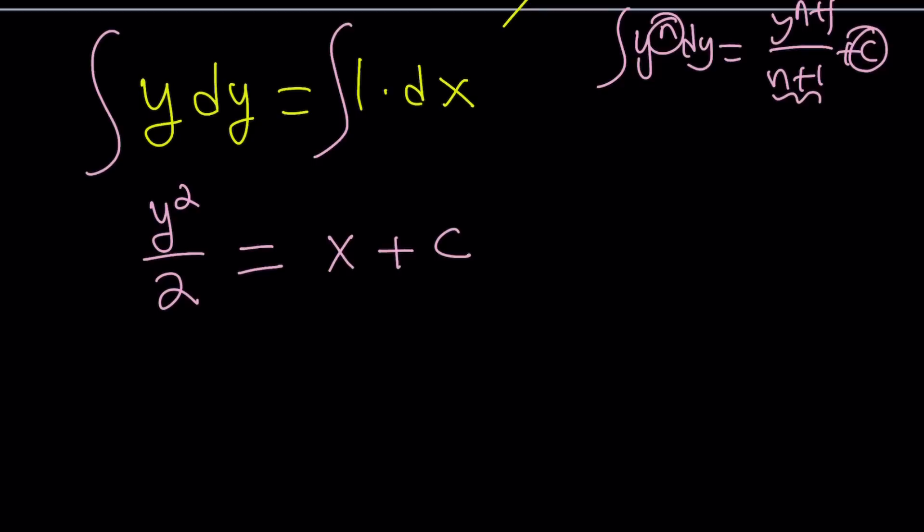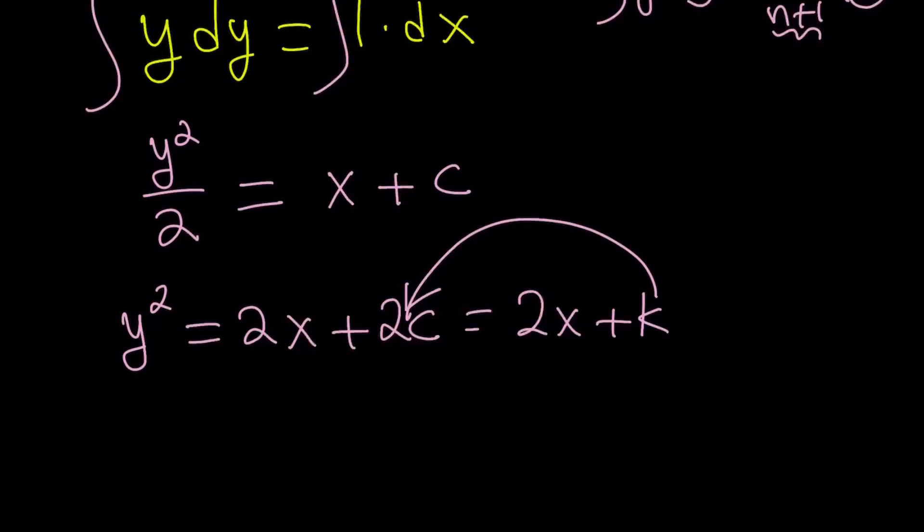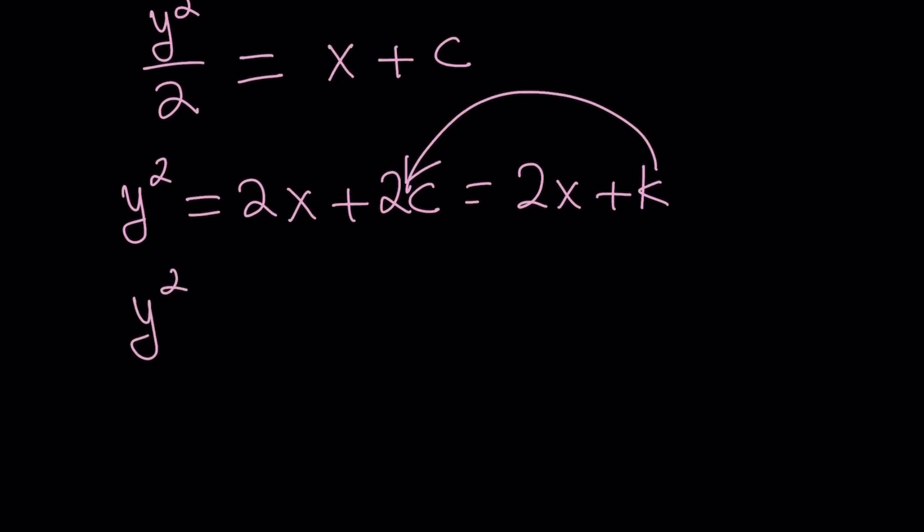Now we're going to go ahead and multiply both sides by 2. That's going to give us y squared equals 2x plus 2c. 2c or not 2c. And then since c is a constant, 2c is a constant we can replace it with something like k. k is another constant that represents 2c. So now we've got this equation y squared equals 2x plus k. So that's the function we're looking for but it's y squared.